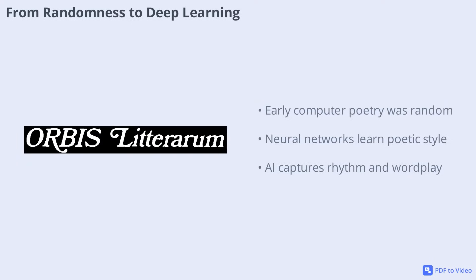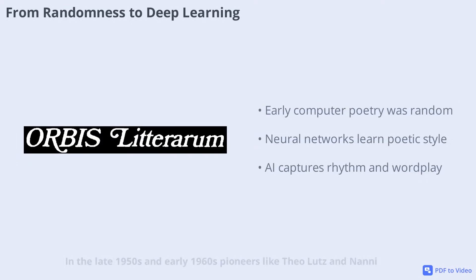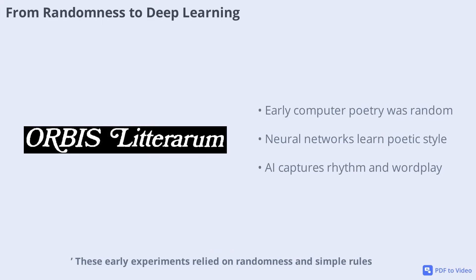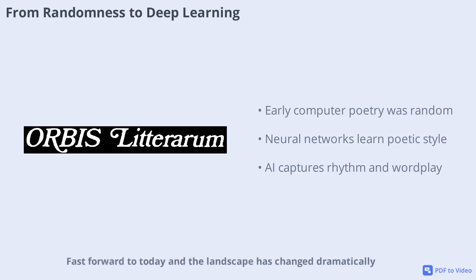Let's rewind to the origins of computer poetry. In the late 1950s and early 1960s, pioneers like Theo Lutz and Nanny Balstrony used computers to randomly combine words, creating what they called stochastic texts. These early experiments relied on randomness and simple rules, producing lines that look poetic but often lack deeper meaning.